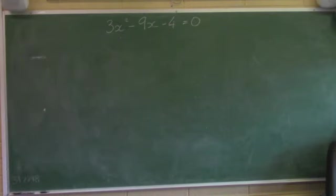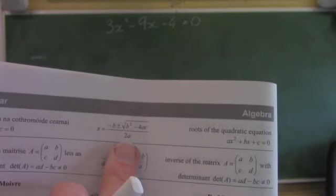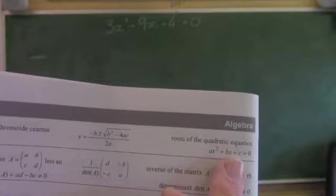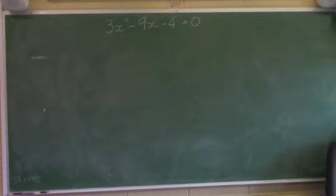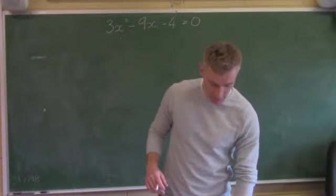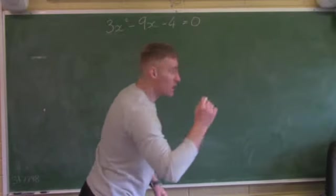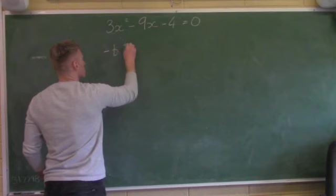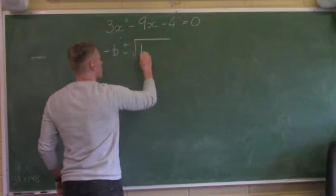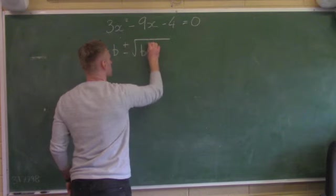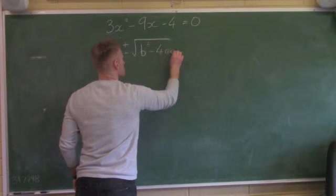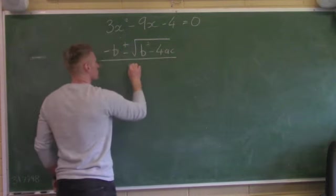Page 20 in our log tables, the very top of the page says algebra — our minus B formula is here. Let's set about solving this question. With my log tables I write my formula: minus B plus or minus the square root of B squared minus 4ac, all divided by 2a.